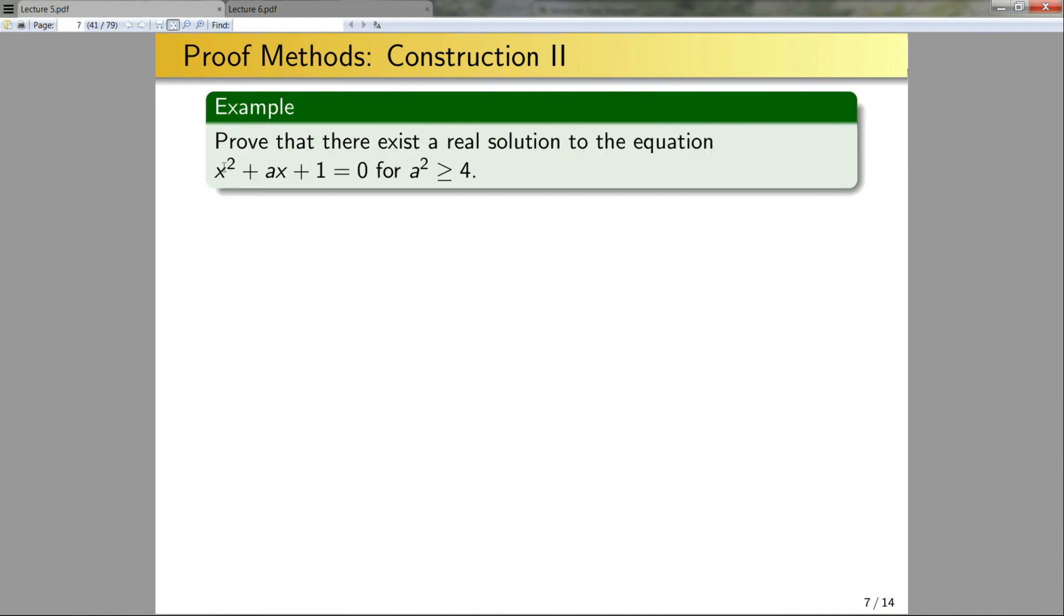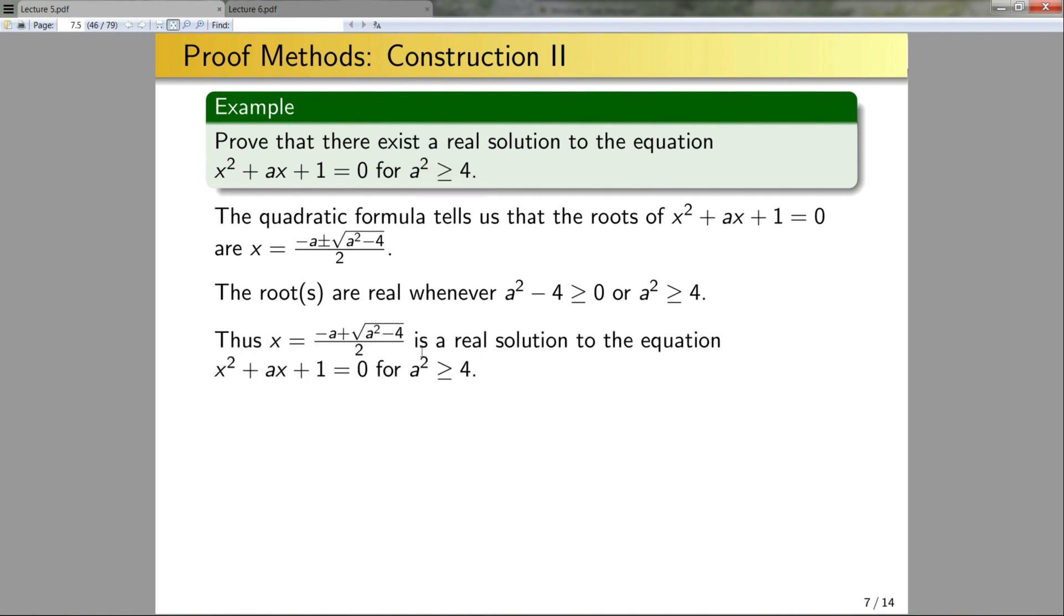Prove that there exists a real solution to this equation x squared plus ax plus one equals zero, for a squared is greater than or equal to four. So how would I do this? Well, I know how to solve equations of this form. That's just the quadratic equation. So the quadratic formula tells me that the roots of this quadratic equation here are simply going to be x is equal to negative a plus or minus the square root of a squared minus four, all over two. So now I'm concerned about the existence of a real solution. So I can ask myself, when are these solutions for x real? Well, these solutions are going to be real precisely when the thing under the square root, so this term here, is positive. So the roots are real whenever a squared minus four is greater than or equal to zero. So I can rearrange this to simply be a squared is greater than or equal to four, which is exactly what I wanted to prove. Thus, x is equal to this is one particular real solution to this equation for a squared is greater than or equal to four. And that was by construction.